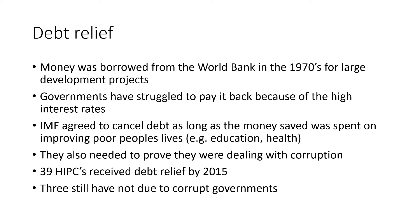They also needed to prove they were dealing with corruption, because one of the reasons many of the poorest countries in the world are poor is because of corrupt governments. If they weren't dealing with corruption, there would be no point cancelling the debt, as the money saved would just end up in the wrong hands. 39 HIPCs — the world's highest income poverty countries — received debt relief by 2015. Three countries still haven't received it because they haven't been able to prove their governments are dealing with corruption properly.